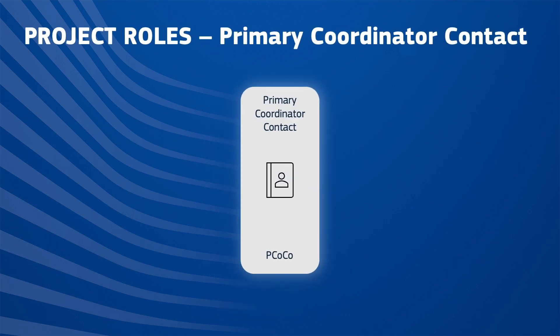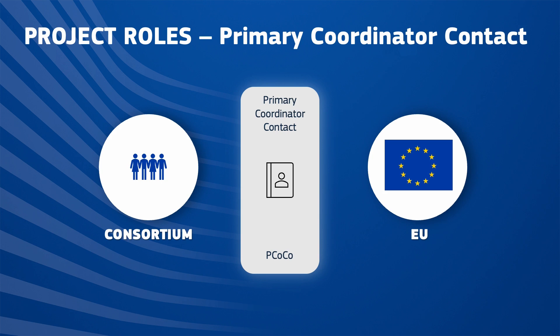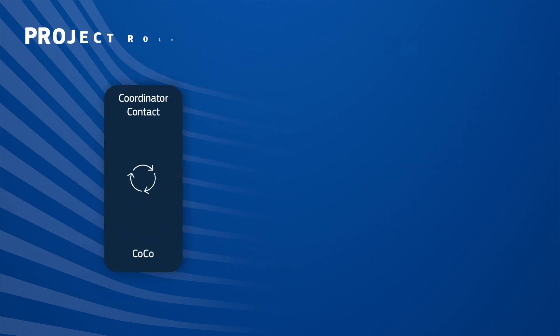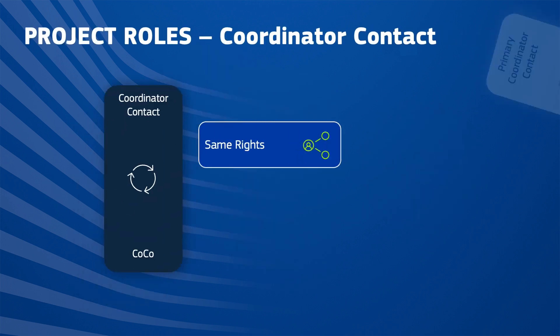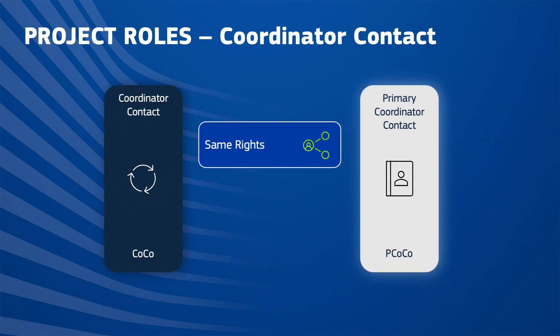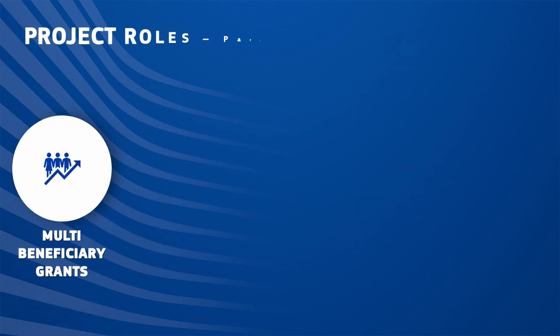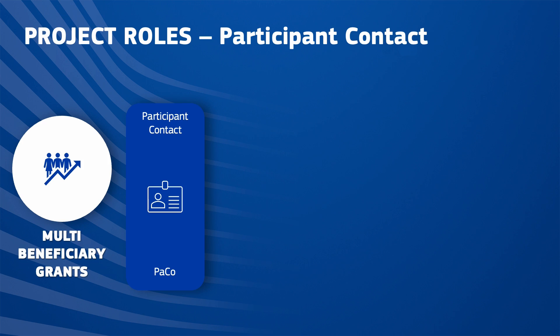The Primary Coordinator Contact is the main contact between the consortium and the EU for a given project, and can nominate and revoke all other project roles for their own organization. There is only one Primary Coordinator Contact per project. Coordinator Contacts have the same rights as the Primary Coordinator Contact in the case of multi-beneficiary grants.